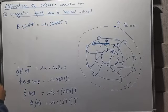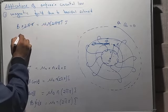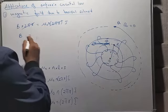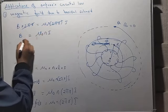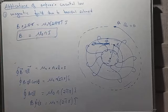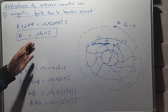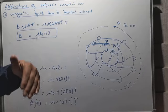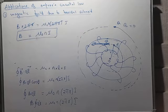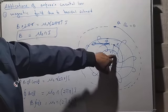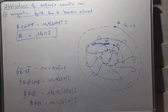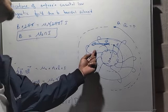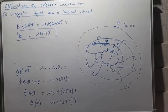So we have B · 2πr = μ₀ · n · 2πr · I. The 2πr cancels from both sides, giving us the magnetic field inside the toroid: B = μ₀nI. So please remember: the magnetic field outside the toroid is zero, the magnetic field at the interior hollow region of the toroid is also zero, but the magnetic field present right inside the toroid winding equals μ₀nI.